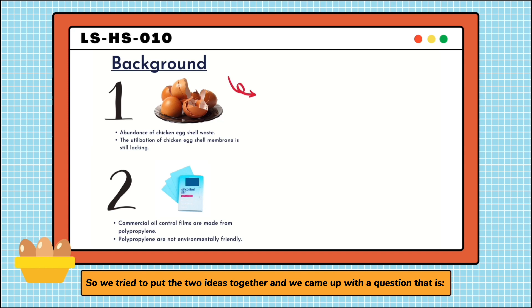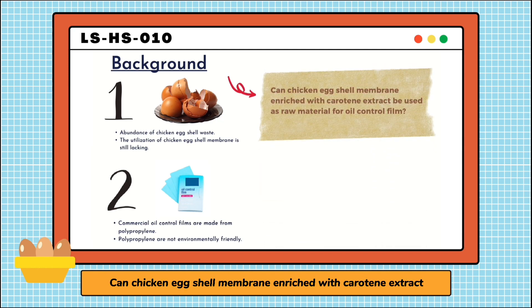So, we tried to put the two ideas together and we came up with a question: Can chicken eggshell membrane enriched with carotene extract be used as raw material for oil control film? We decided on enriching it with carotene extract to add more value to the product.